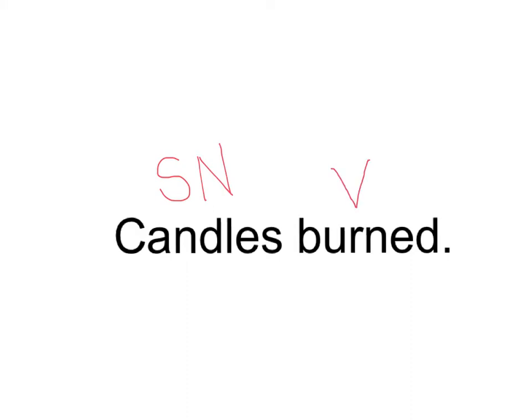As part of my procedure, I separate my complete subject from my complete predicate. The complete subject is my subject noun and all the words that describe it. The complete predicate is my verb and all the words that describe it. In this sentence, I put a slash between candles and burn. At the end, I label it D for declarative. At the very beginning, I write the pattern label: SN, V on top, and P1 for pattern one underneath.